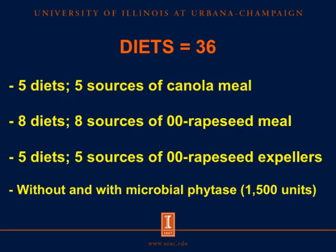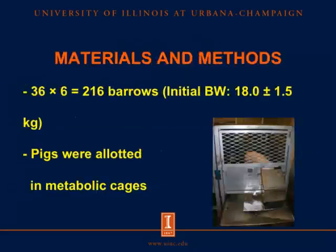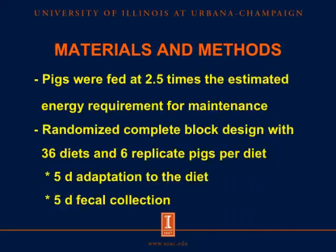We formulated 36 diets: one diet from each of the five canola meal sources, eight from the 00 rapeseed meal sources, and five from the 00 rapeseed expeller sources — 18 diets without phytase and 18 diets with microbial phytase at 1,500 units. We used 216 barrows at an initial body weight of 18 kilograms, allotted in metabolic cages for fecal collection to calculate phosphorus digestibility, in a randomized complete block design with 36 diets and 6 replicates per diet.